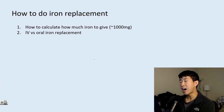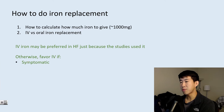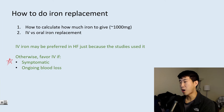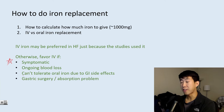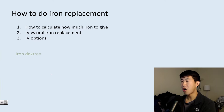IV iron may be preferred in heart failure because that's how the studies used it — they didn't really evaluate oral iron. In general, outpatient patients will likely get oral iron, but IV iron is preferred if someone is highly symptomatic from anemia, has ongoing blood loss requiring rapid replacement, can't tolerate oral iron due to GI side effects, has had gastric surgery or a malabsorptive process, or if there's clinician preference for faster repletion.